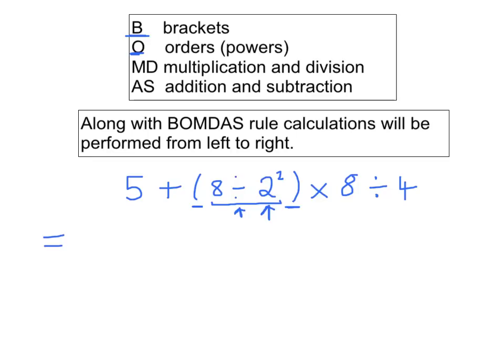So that's the very first thing we're going to end up doing, is working out the power. 2 to the power of 2 is 4, and then it'll be 8 divided by 4, multiplied by 8, and divided by 4. So looking at the new calculation here, we've got a bracket, and the BOMDAS rule will choose a bracket, so it'll be 5 plus 8 divided by 4 is 2, multiplied by 8, and divided by 4.